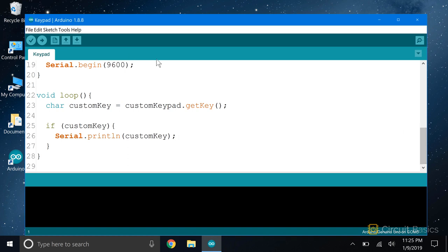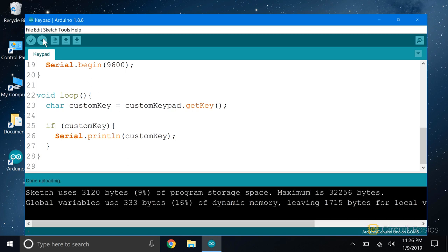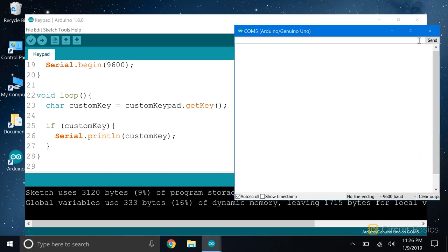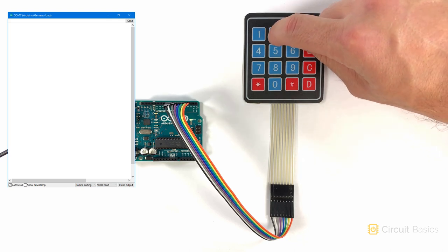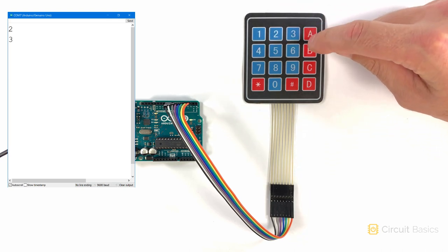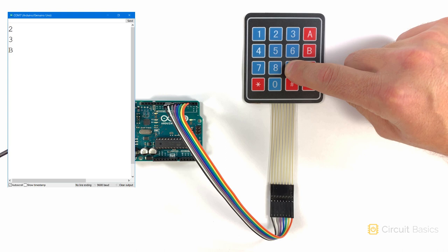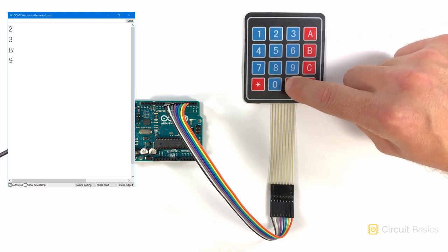Okay, let's upload this and see if it works. Okay, great. So whenever I press a key the value is printed to the serial monitor.